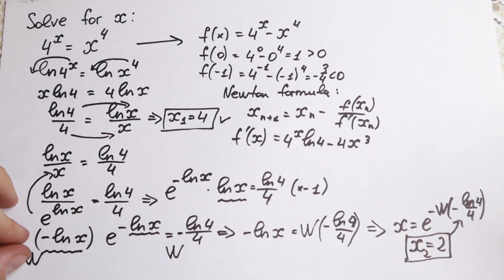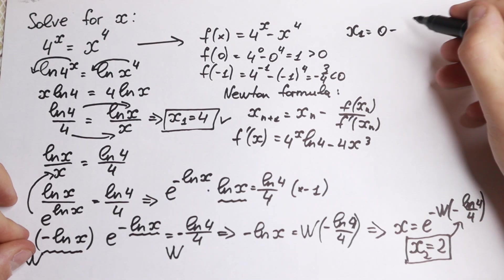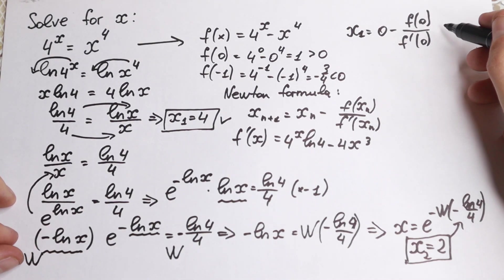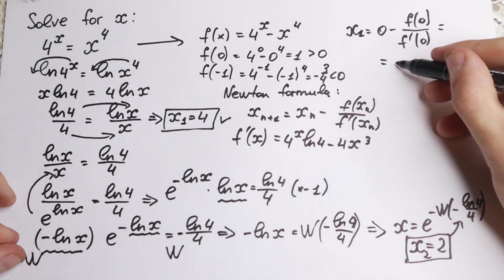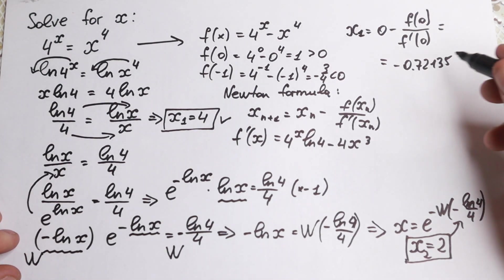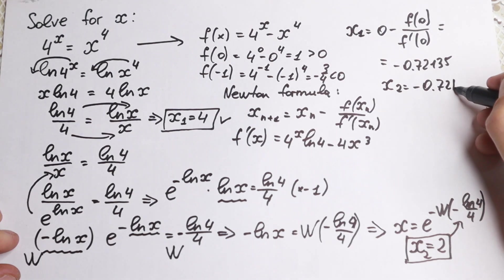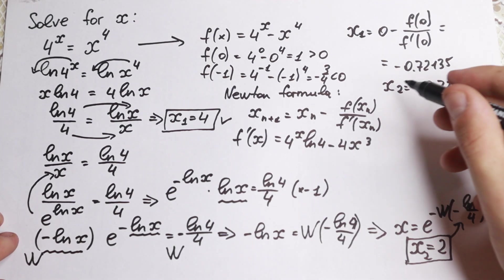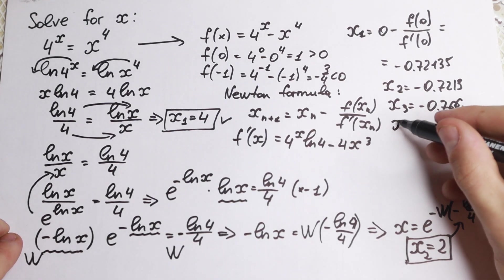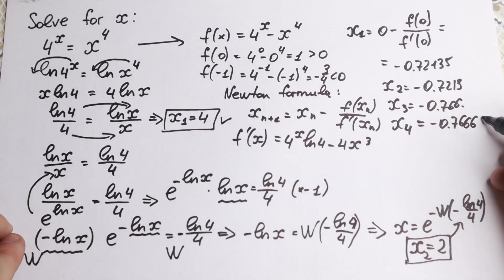We need to find x₁ first: plug in x=0, giving x₁ equal to approximately minus 0.72135. Then x₂ equal to approximately minus 0.7213. Then x₃ equal to approximately minus 0.766. And x₄ equal to approximately minus 0.76665. We really need this x with index 4, because this is our fourth iteration giving our third solution.